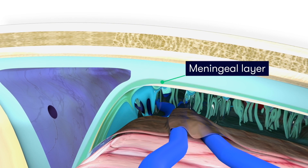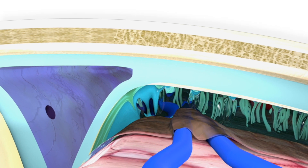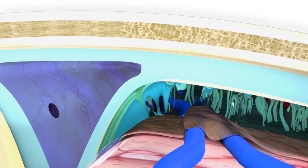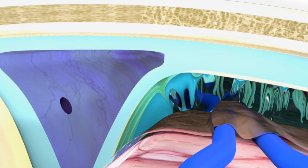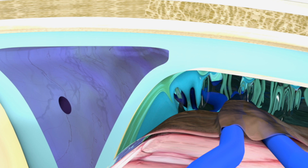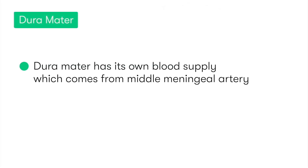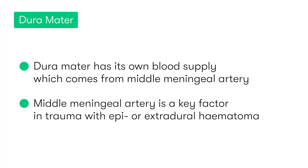It is actually between the two layers of the dura mater where we find the dural venous sinuses. These are responsible for being the main source of venous drainage of the skull and drain into the internal jugular veins.